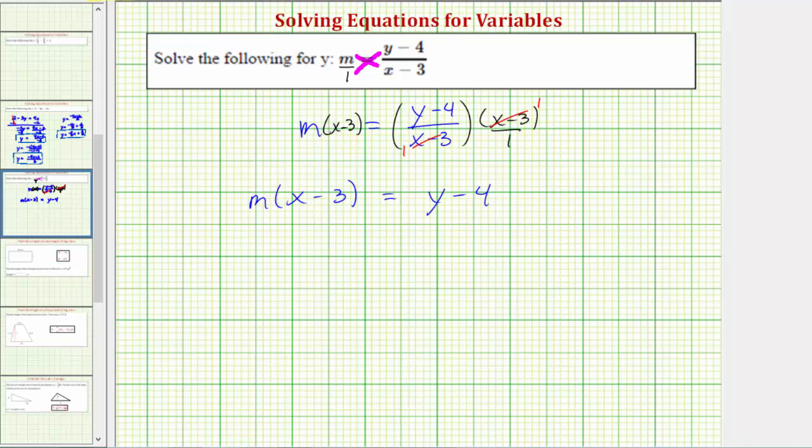Looking at the right side of the equation, we are now one step away from solving for y. In order to isolate y on the right side, we need to undo the subtraction by adding four to both sides of the equation.